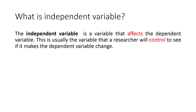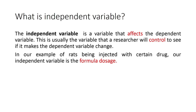And what is the independent variable? The independent variable is a variable that affects the dependent variable. This is usually the variable that a researcher will control to see if it makes the dependent variable change. Yung independent variable, napakadali pong tandaan — ito yung variable na nakaka-apekto sa dependent variable, at ito yung kinokontrol ng researcher. In our example, the researcher controls the dosage — konti lang or maraming dosage. So nasa kontrol ng researcher yung dosage. In our example, our independent variable is the formula dosage.